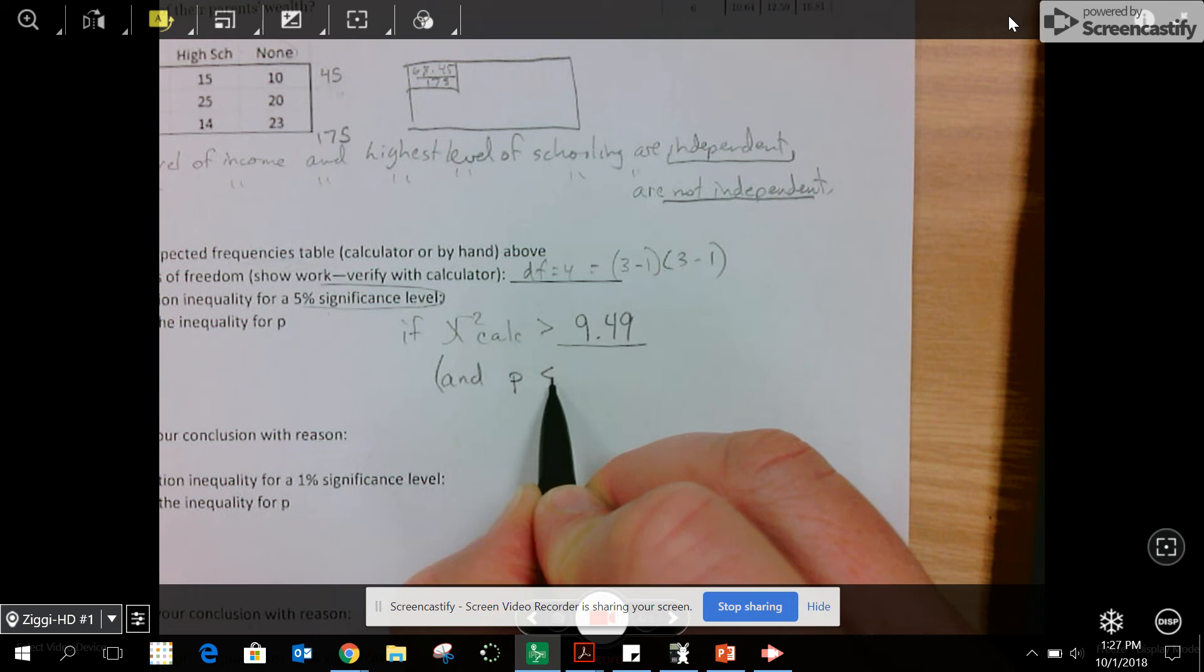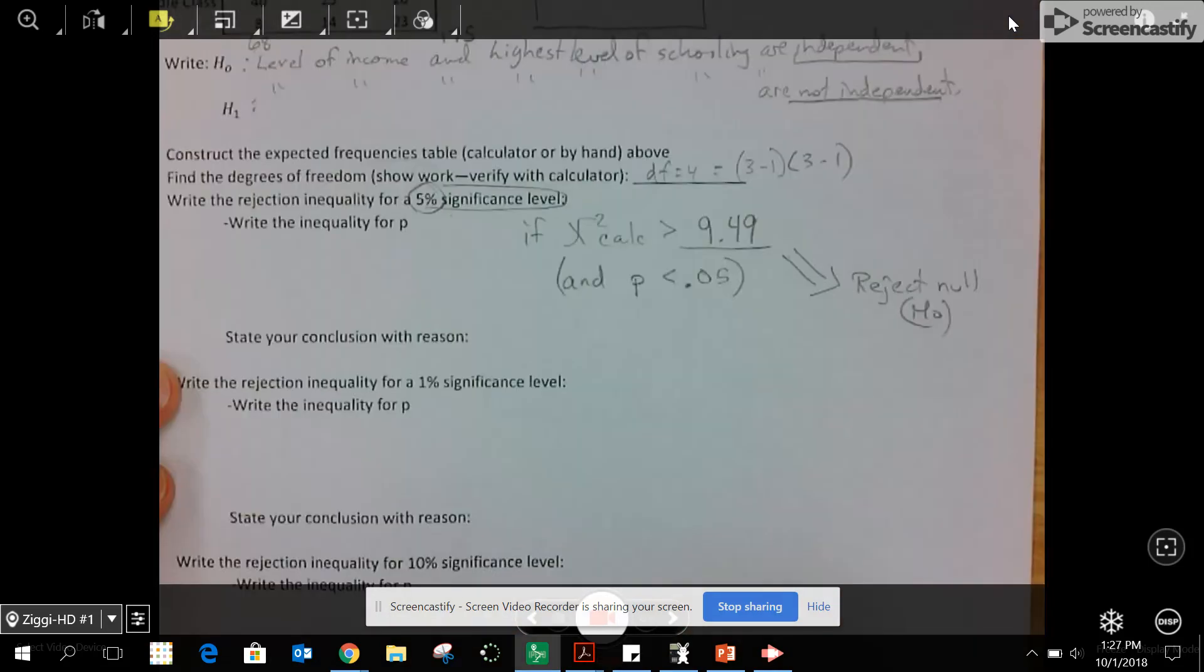I always write this first. Notice I didn't write my chi-squared stuff down yet. Now I can actually test it. The chi-squared is 15.8, which is greater than 9.49, and the P value here is 0.00327.